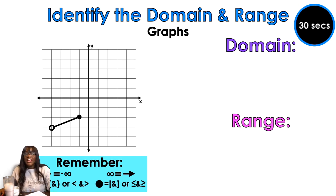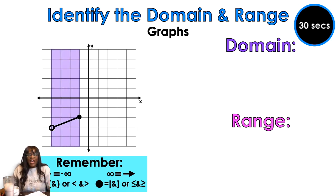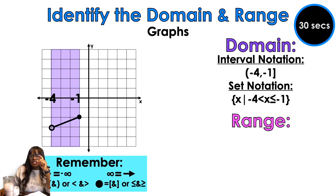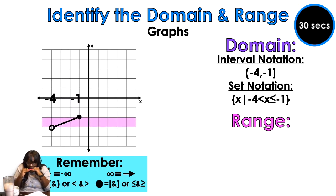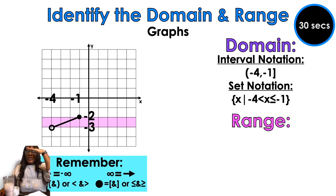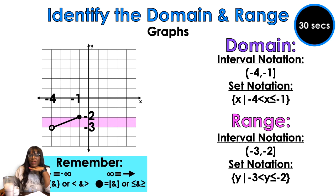Okay so we have this little tiny line. From left to right we've got negative four to negative one. Notice there's an open circle at negative four, so when I write it I have to use parentheses. And there's a closed circle at negative one, so the negative one is going to get a bracket. That's my domain. Now my range is going to be really skinny from bottom to top — I'm going to do negative three to positive two, with an open circle at negative three and a closed circle at negative two.